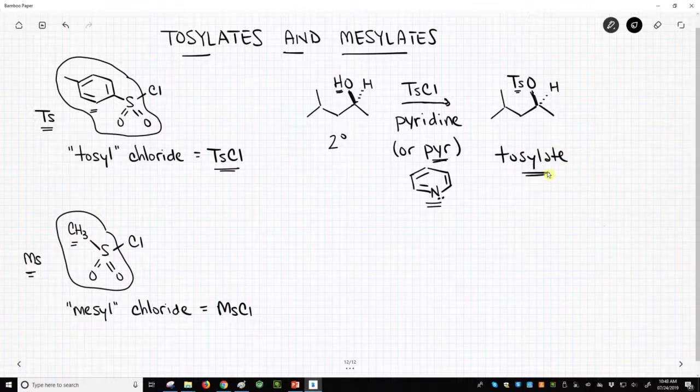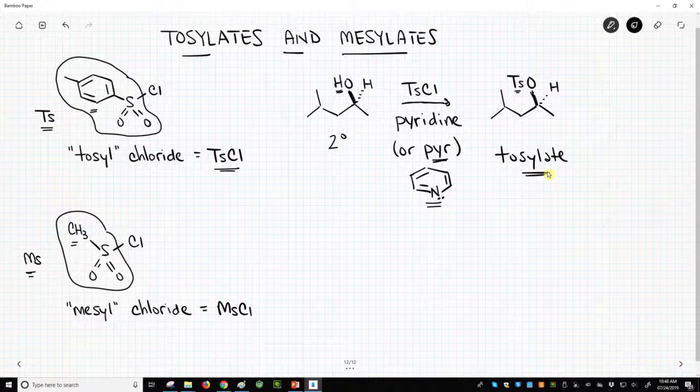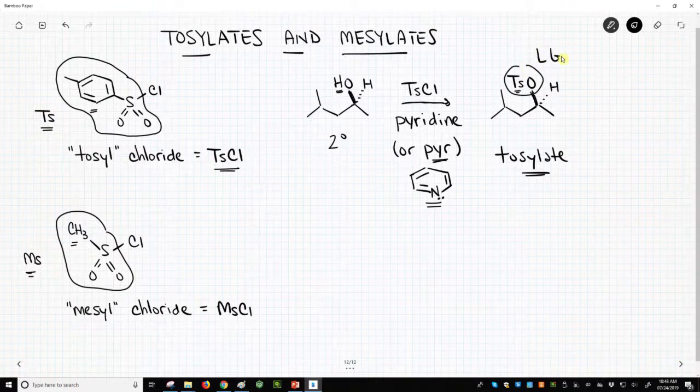So we convert our alcohol into a tosylate, or our alcohol into a mesylate. So this is a really good leaving group.